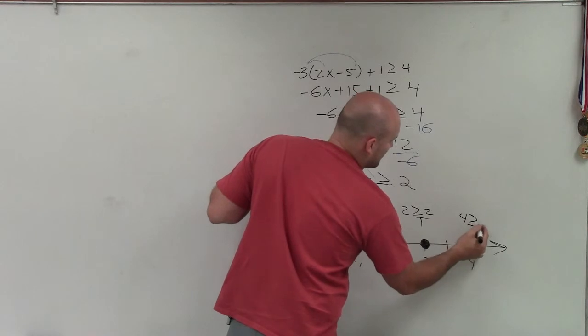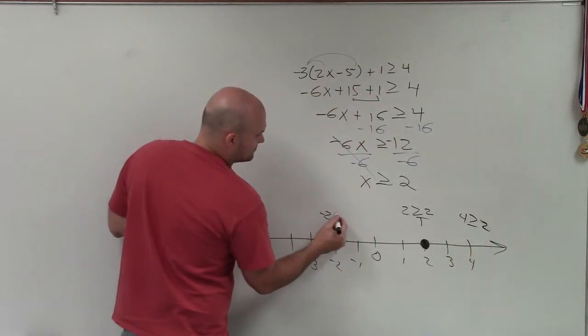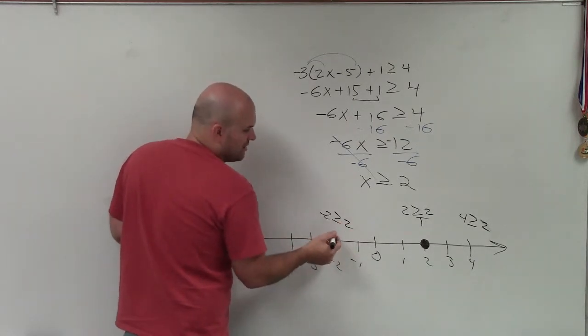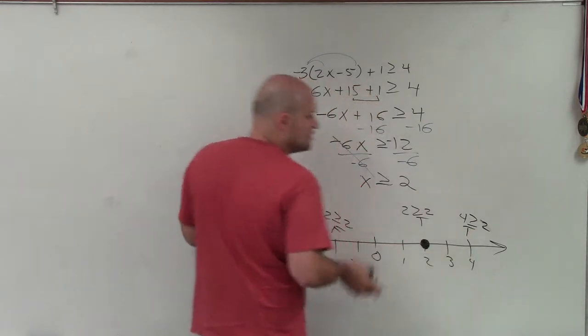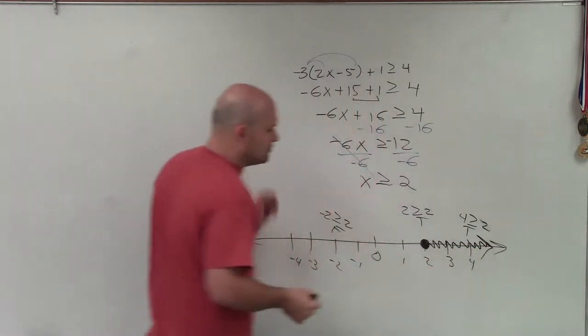Then I just test two other points. Let's do 4 and let's do negative 2. Is negative 2 greater than or equal to 2? No, that's false. Is 4 greater than or equal to 2? That's true. So you always go ahead and shade towards your true point, and it doesn't matter which points you choose.